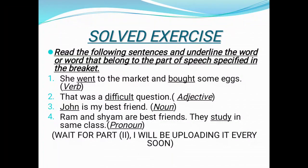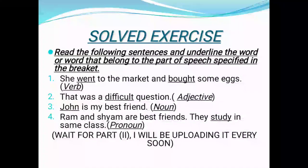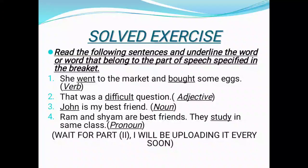In the next sentence, 'That was a difficult question,' you have to underline the adjective as shown in the bracket. So our adjective will be 'difficult.' In another sentence, you have to underline the noun according to the word given in the bracket, so our noun will be 'Johan.' In the sentence 'Ram and Shyam are best friends. They study in the same class,' you have to underline the pronoun — our pronoun will be 'they,' used for the plural.